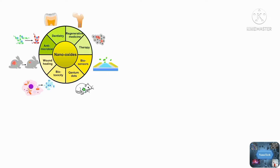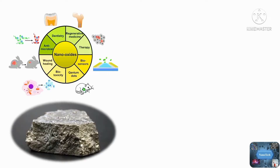Cerium is the most abundant rare earth element in the lanthanide class, and it may be found in the crust of the earth. It can be found in both a trivalent and a tetravalent form. Cerium is stable in both the trivalent and tetravalent states, whereas other lanthanide elements are only stable in the trivalent form.